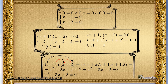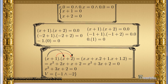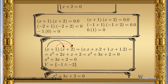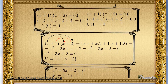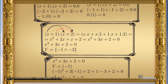What values make this product true? If x equals minus 1, the factor x plus 1 becomes 0, and the equation is true. If x equals minus 2, the factor x plus 2 becomes 0, and multiplying by minus 1 also gives 0, so the equation is true.